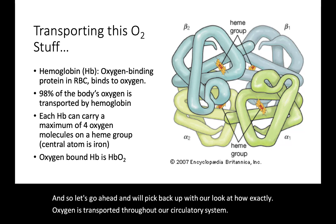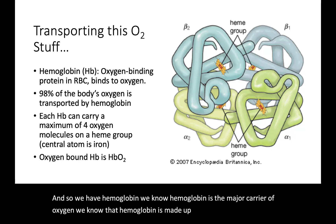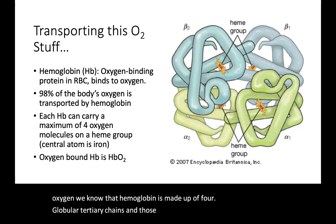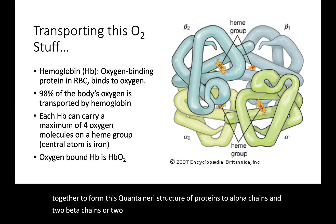We have hemoglobin. We know hemoglobin is the major carrier of oxygen. Hemoglobin is made up of four globular tertiary chains, and those four tertiary globular chains come together to form a quaternary structure of proteins — two alpha chains and two beta chains, or two alpha proteins and two beta proteins.